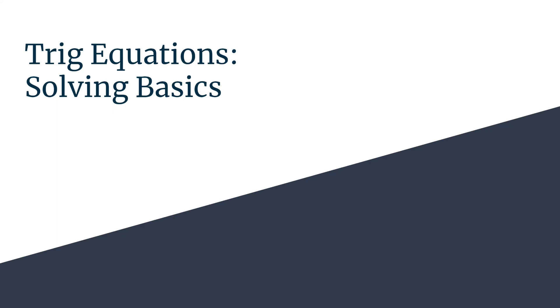In this video on solving basics for trig equations, we're going to look at the equation cosine theta equals negative square root 3 over 2.